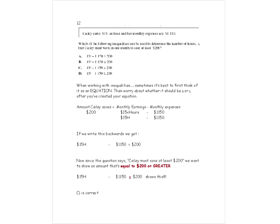The next question: Kaylee earns $15 an hour and her monthly expenses are $1,150. Which inequality determines how many hours she must work in one month to save at least $200? 'At least $200' means $200 or more. It helps to first treat it as an equation: the amount Kaylee saves equals her monthly earnings minus her monthly expenses. Let's just pretend she saves exactly $200 for now.